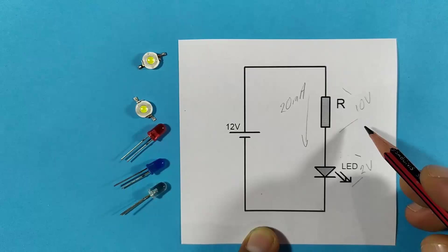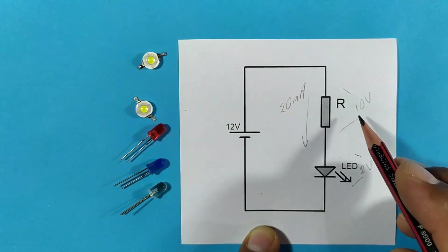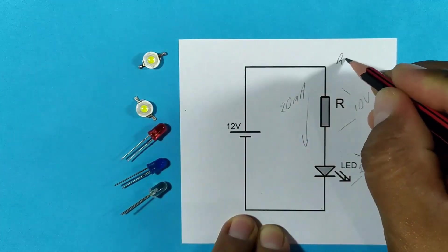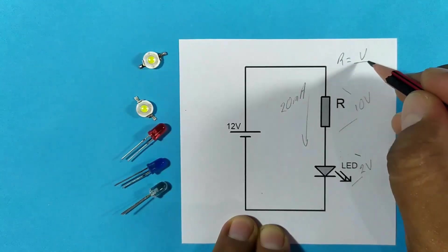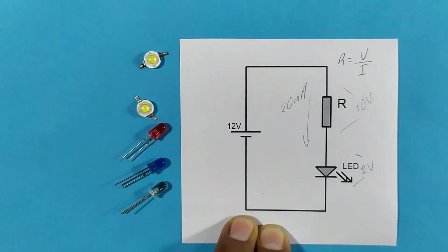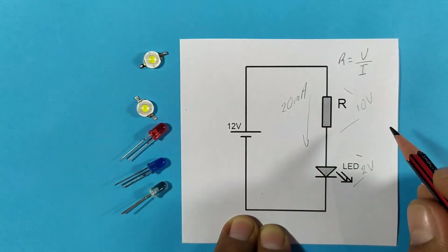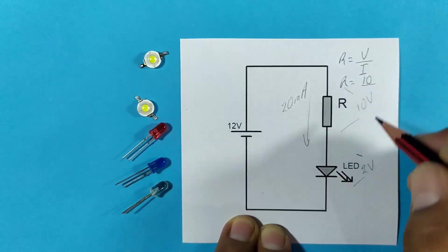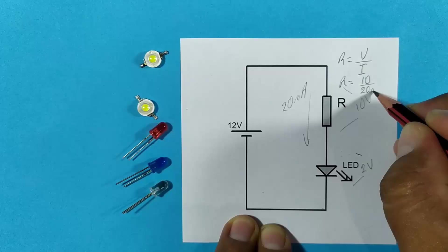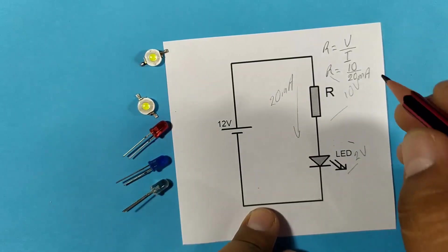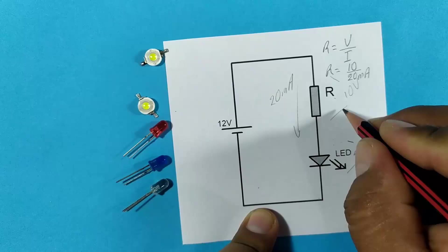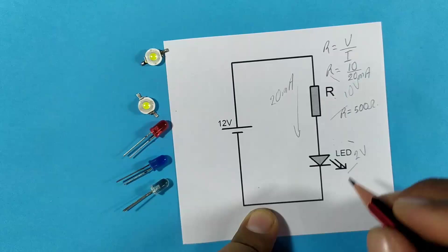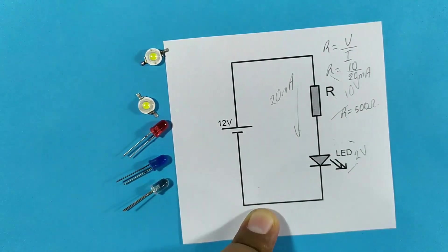Let's take this part into account. So I have current, I have voltage. We use Ohm's law which tells us that in this case, the resistance will be equal to the voltage over the intensity. Based on that formula, we can calculate the value of the resistor by replacing the values of 10 volts divided by 20 milliamps. Then the resistance would be equal to 500 ohms, and the closest would be 470 ohms if we don't get 500.